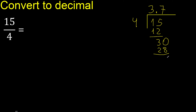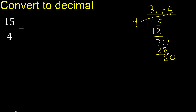Subtract: the remainder is 2. Complete with 0 — we now have 20. 4 multiplied by which number? 4 multiplied by 5 is exactly 20 — not greater. Subtract: remainder is 0. Therefore, we are finished.